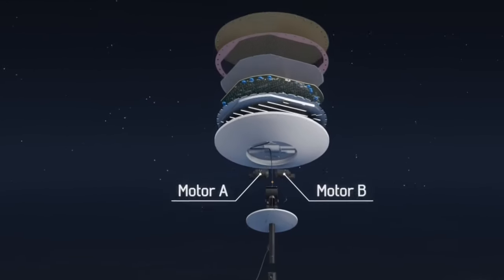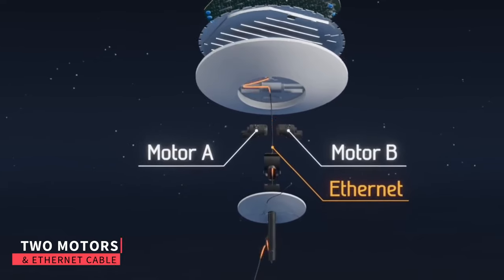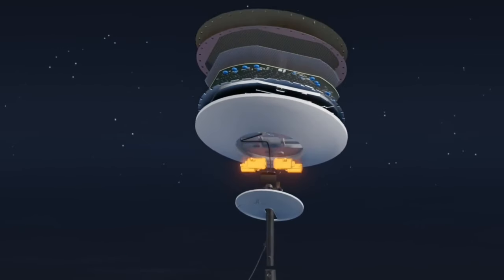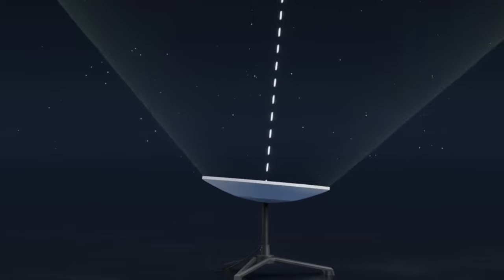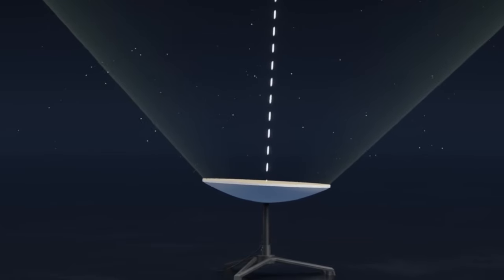Now, let's take a closer look at Dishy McFlatface. It features two motors and an ethernet cable connecting to the router. During setup, these motors aim the Dishy in the general direction of the Starlink satellite, though they don't constantly track it.